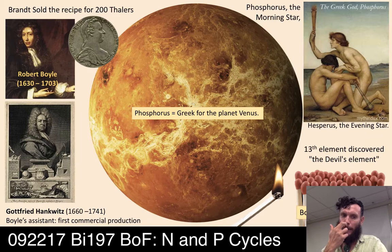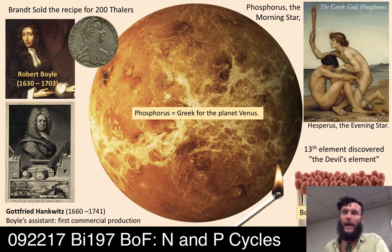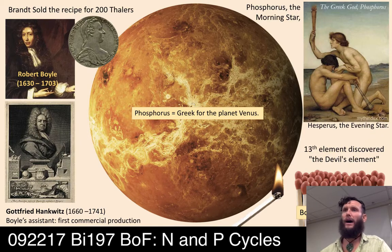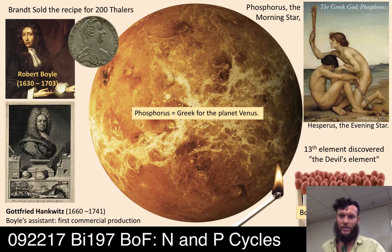The first commercial production of phosphorus came from Gottfried Hankwitz, Boyle's lab assistant, in the early 18th century. He scaled up phosphorus production so people could use it for matches and other applications after they discovered its utility.